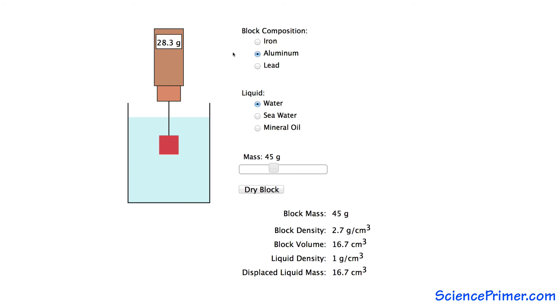Archimedes famously used these observations to compare the density of two irregularly shaped objects.